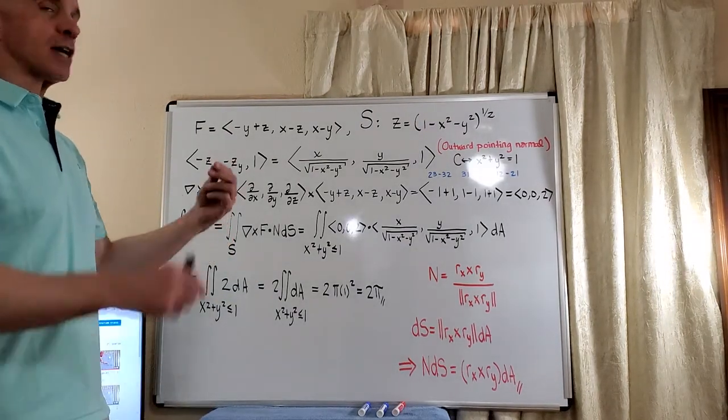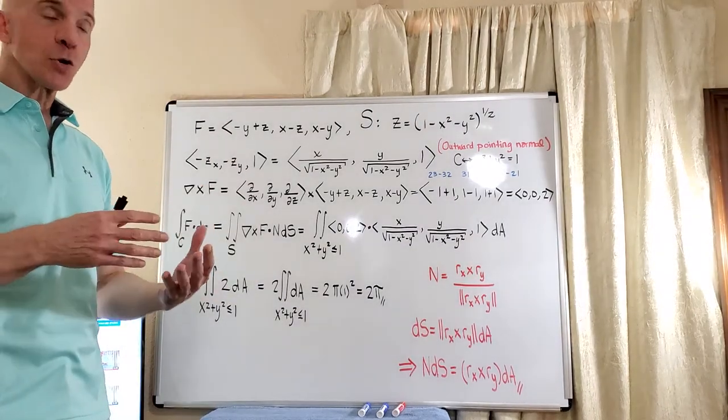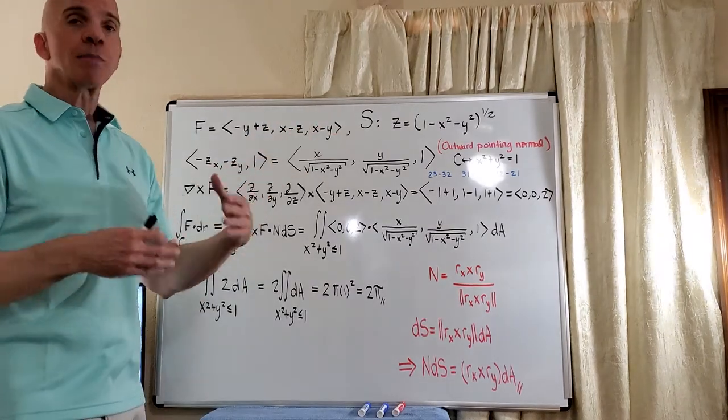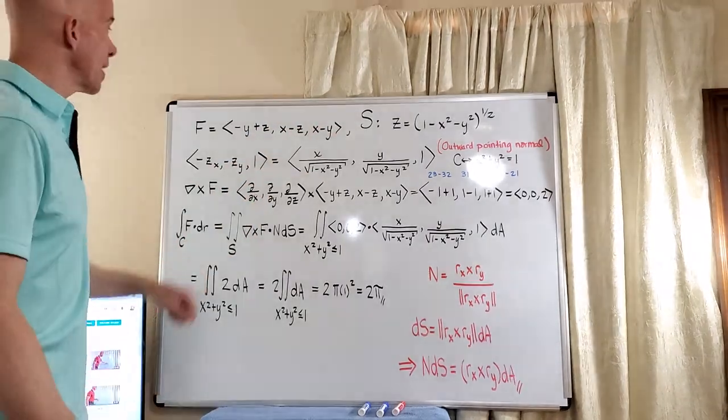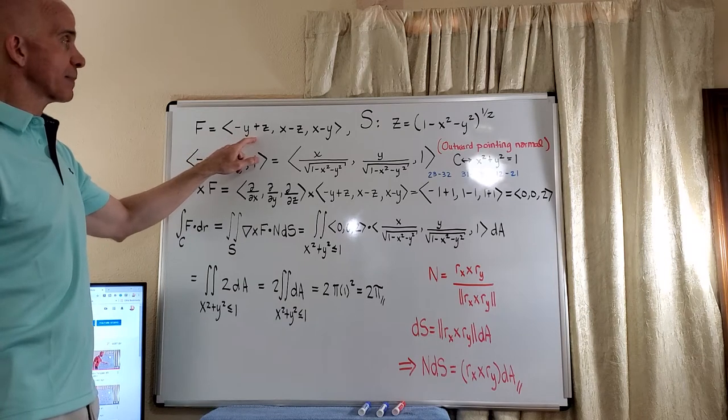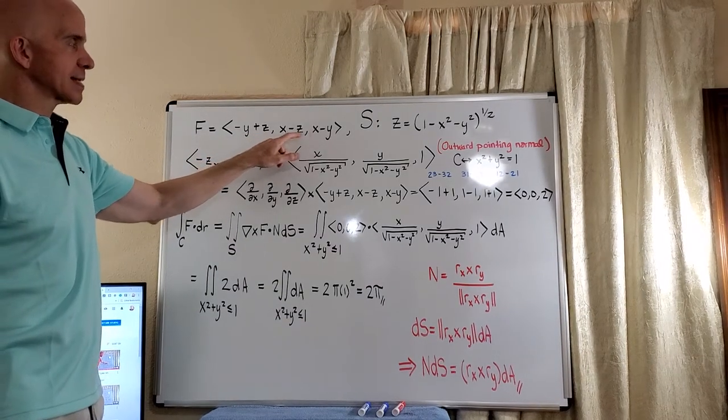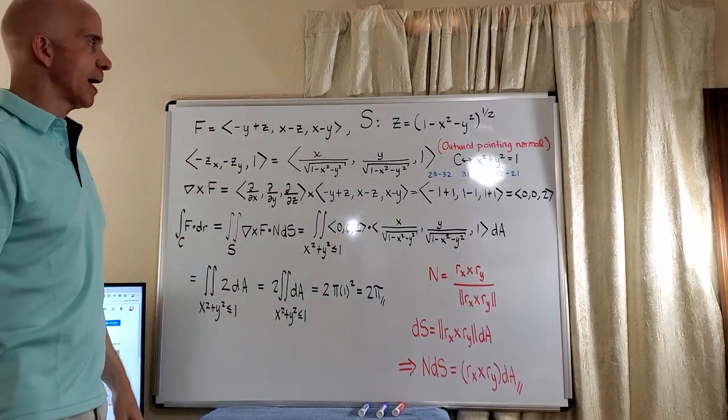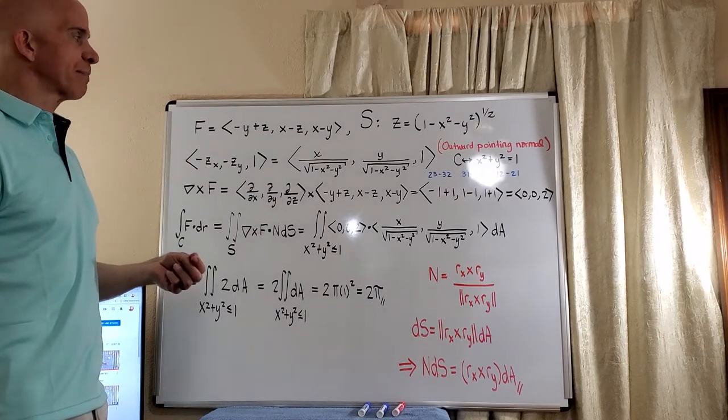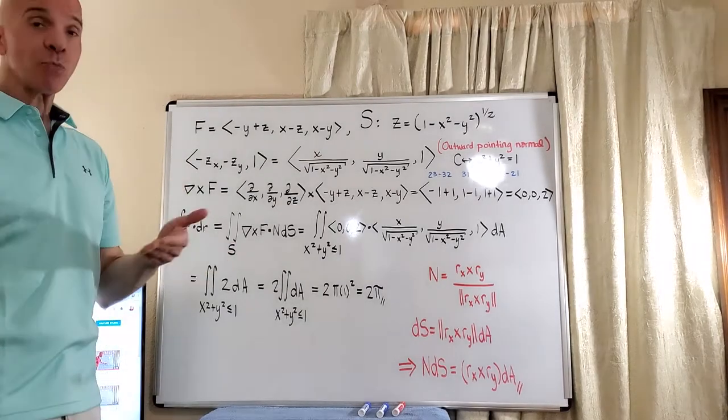So just remember, divergence theorem, closed surface. Stokes' theorem, non-closed surface. Now our vector field in this case is negative y plus z comma x minus z comma x minus y. So when we use Stokes' theorem, we need the curl, and we need the normal.